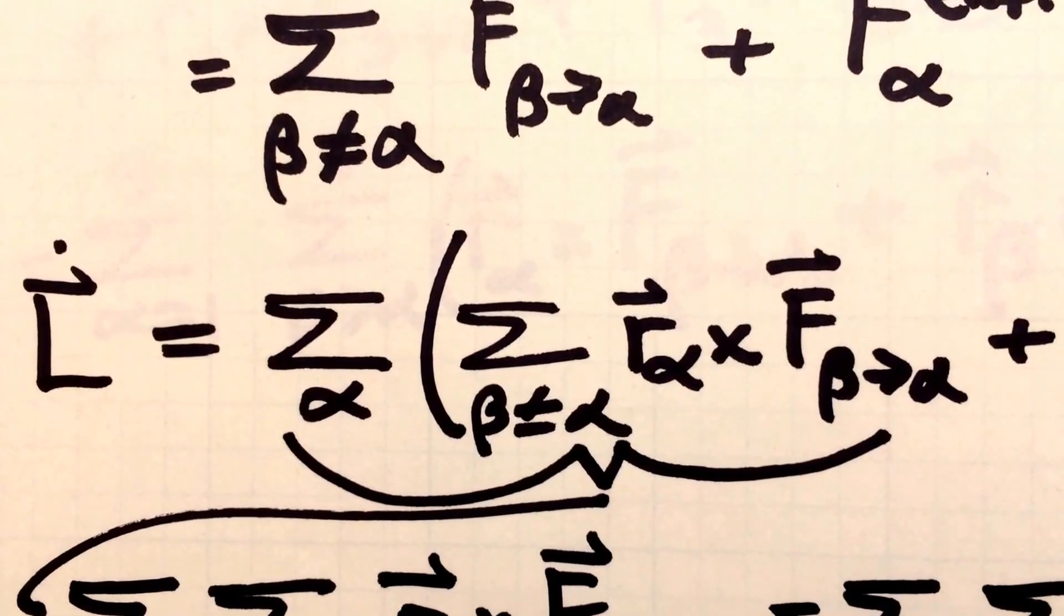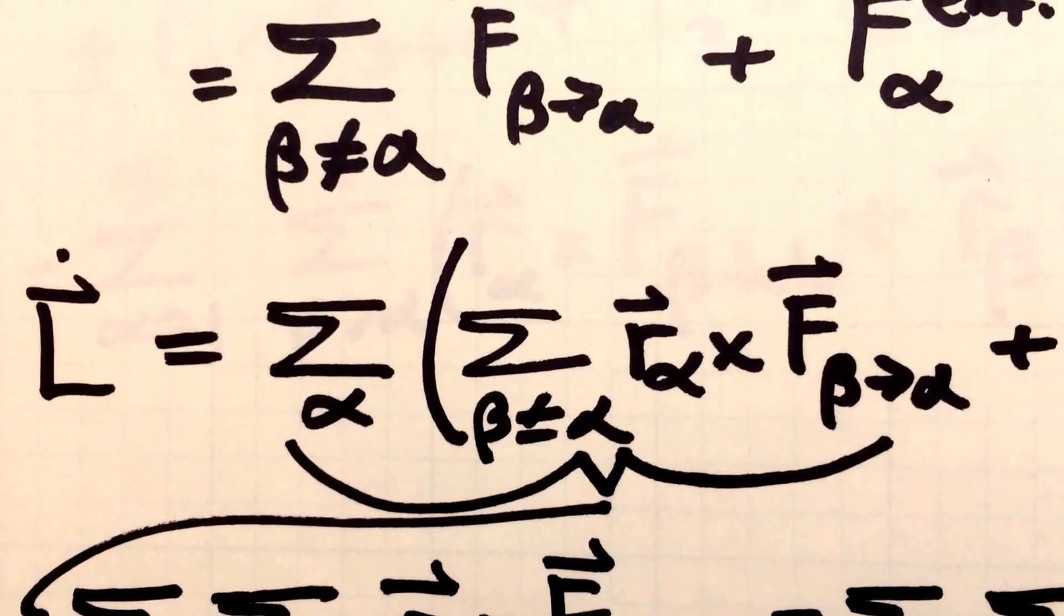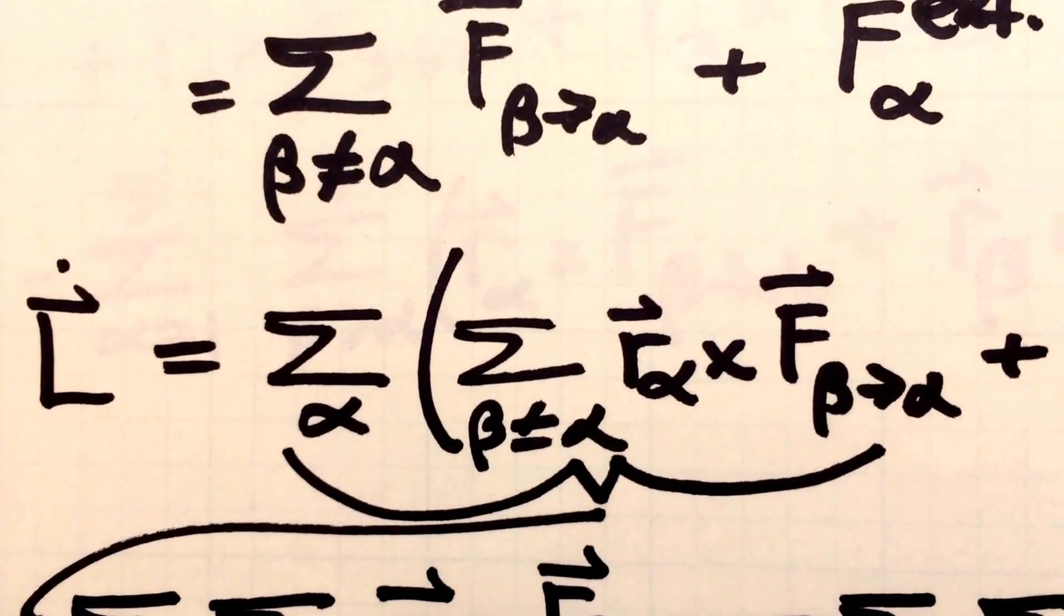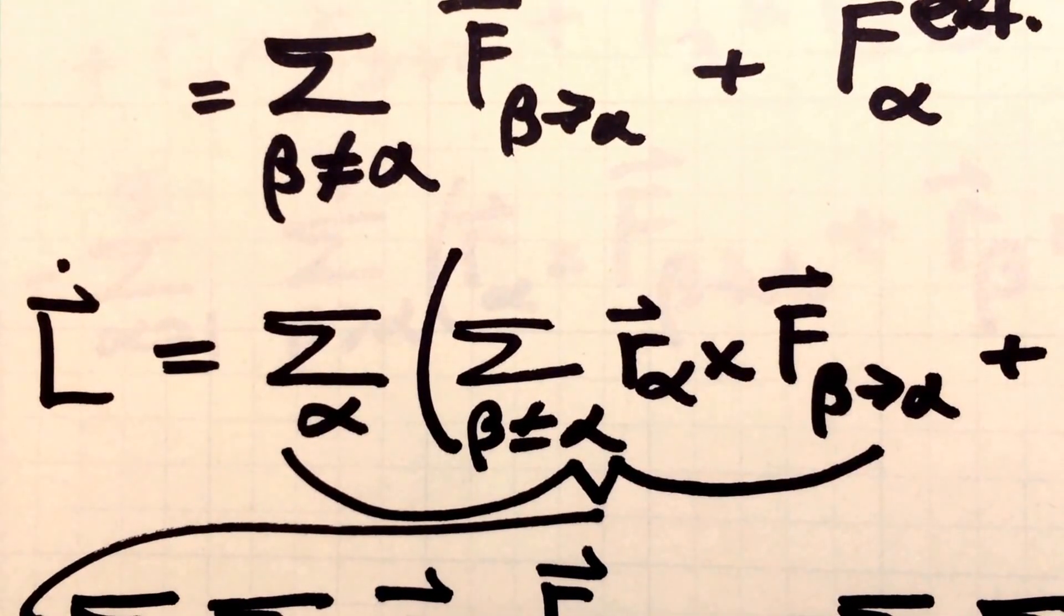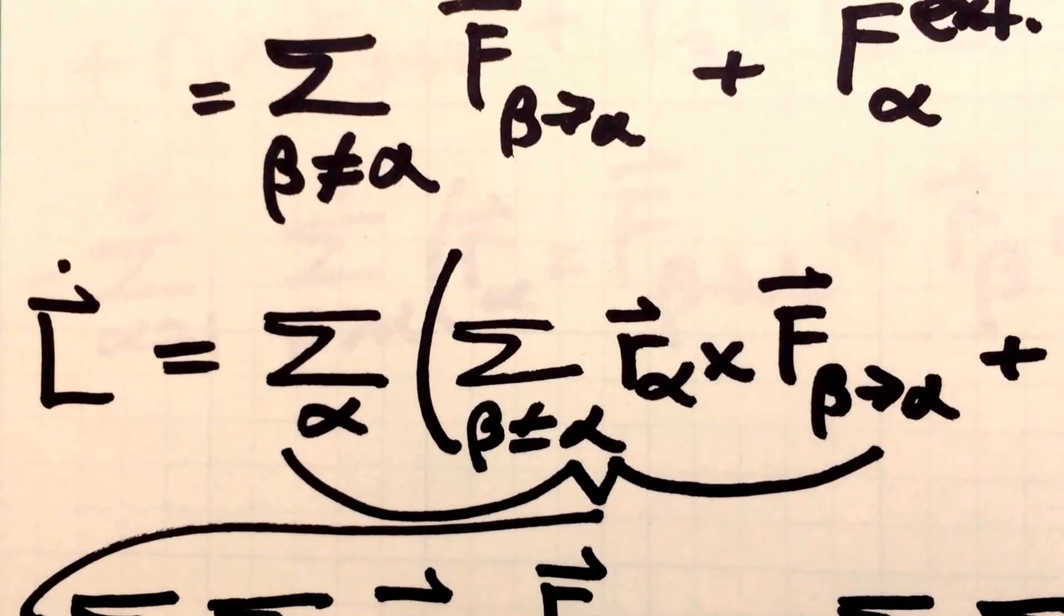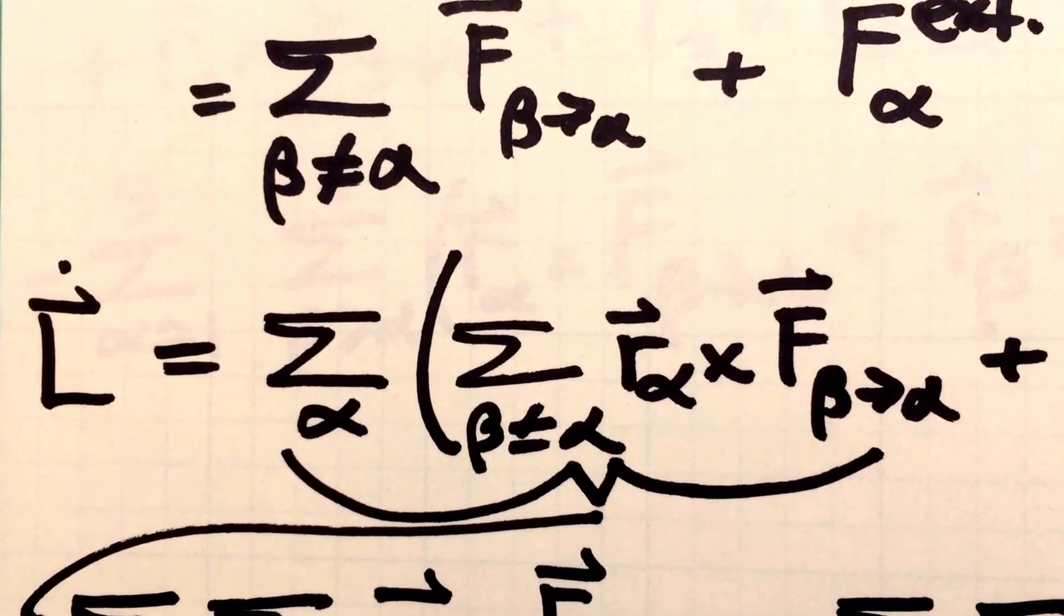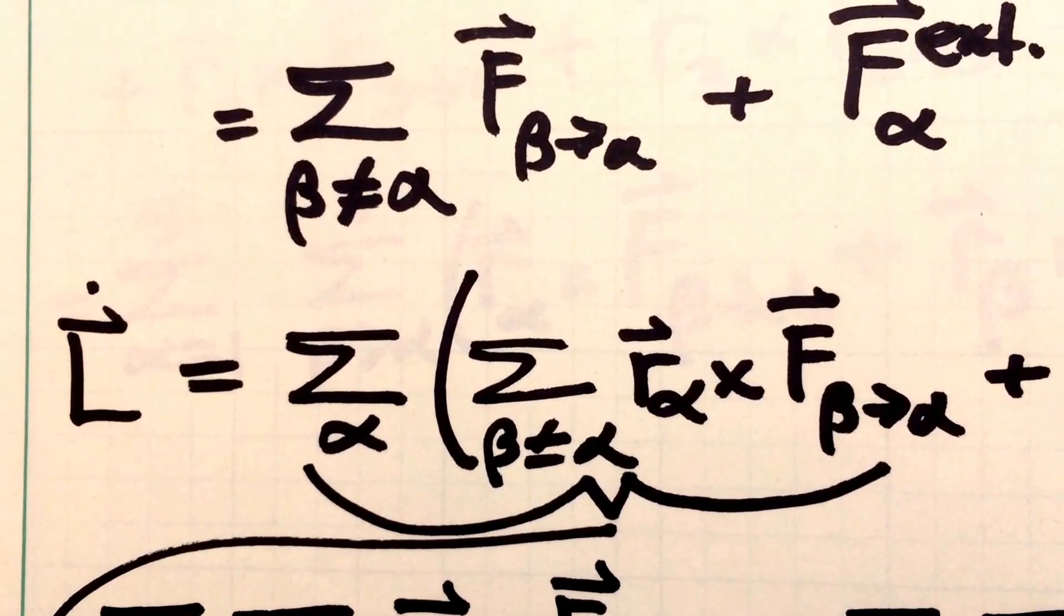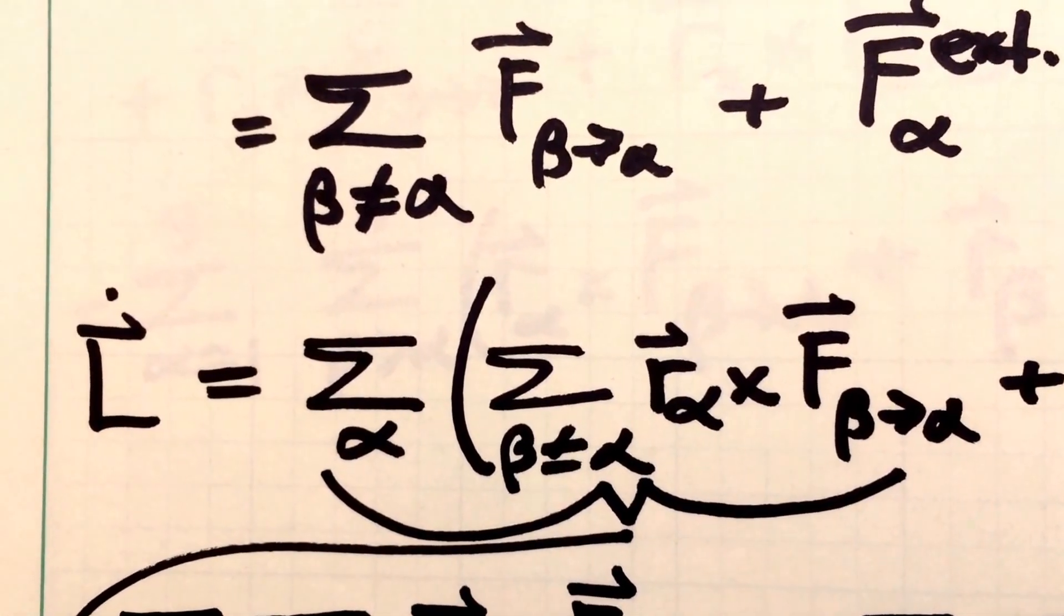And so that gives us two terms for the time derivative of the system's angular momentum vector. There's going to be a sum over alpha of a sum over beta not equal to alpha of r alpha vector crossed into the force vector representing the force of particle beta on alpha,